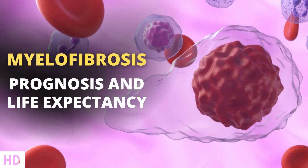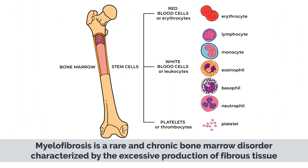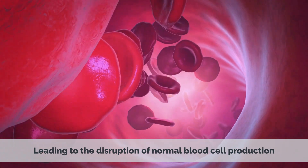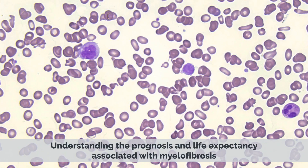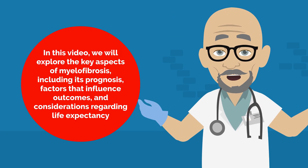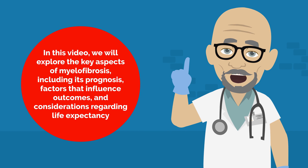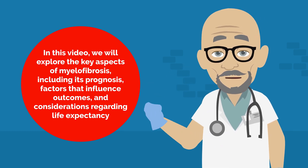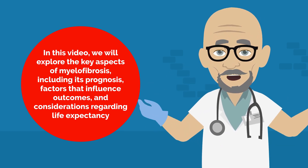Today's medical-centric topic is Myelofibrosis, Prognosis, and Life Expectancy. Myelofibrosis is a rare and chronic bone marrow disorder characterized by excessive production of fibrous tissues, leading to the disruption of normal blood cell production. Understanding the prognosis and life expectancy associated with myelofibrosis is important for individuals diagnosed with this condition and their loved ones. In this video, we will explore the key aspects of myelofibrosis, including its prognosis, factors that influence outcomes, and considerations regarding life expectancy.